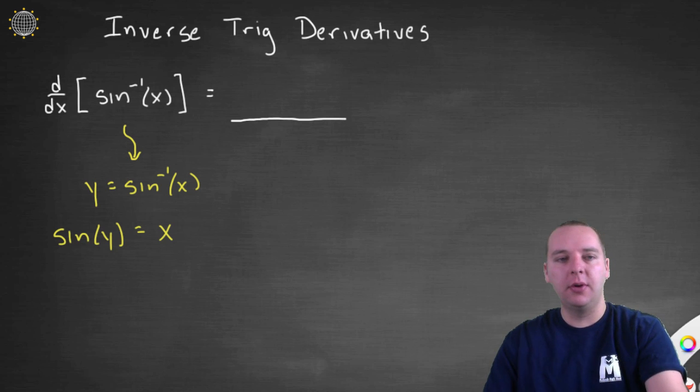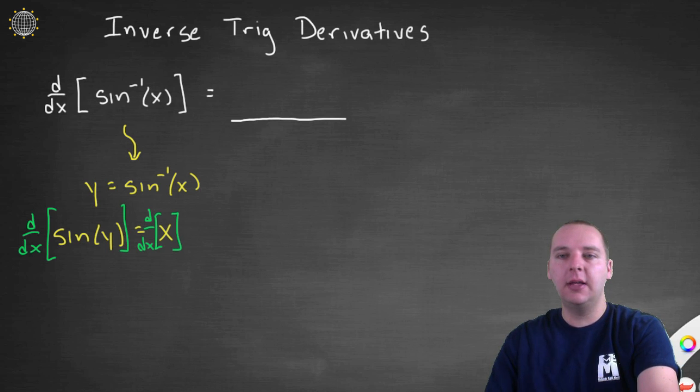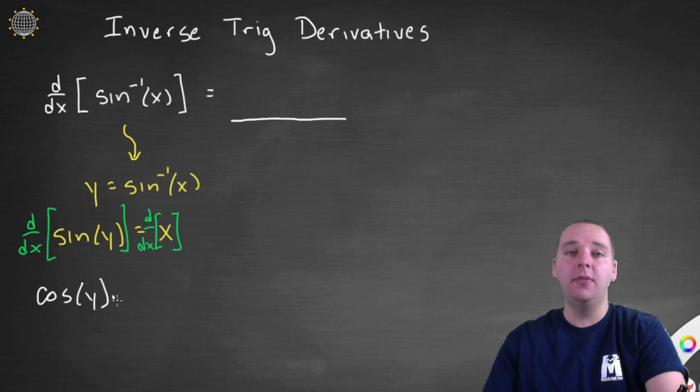So what we do with implicit differentiation is we differentiate the outside, the derivative of, let me jot down that we are taking a derivative so we don't forget. So we're going to differentiate the left side, and we're going to differentiate the right side as well. The derivative of x is 1, right.